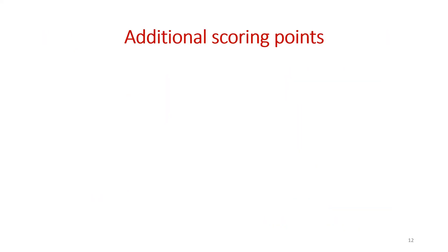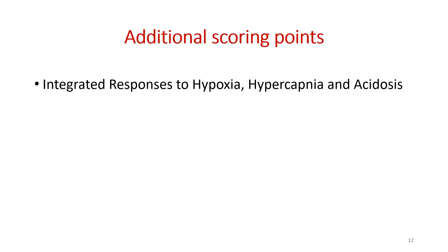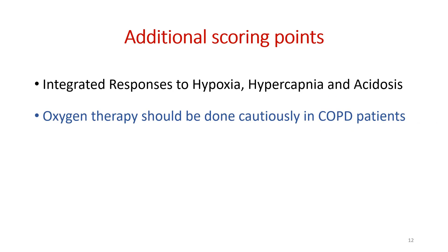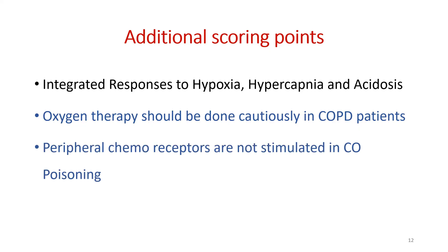For additional scoring points, you can also write about integrated responses to hypoxia, hypercapnia, and acidosis. In actual life, these mechanisms occur hand in hand, so mentioning integrated responses adds value. You can also include clinical aspects such as why oxygen therapy should be done cautiously in COPD patients and why peripheral chemoreceptors are not stimulated in carbon monoxide poisoning — these additional points will enhance your marks.